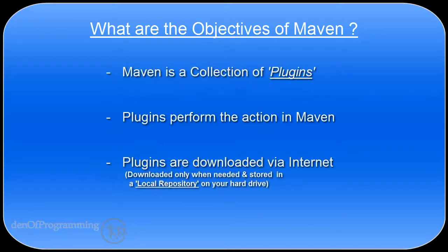Maven provides easy migration to new features. Maven is really just a core framework for a collection of components or plugins. Plugins are where much of the real action is performed. They are used to create JAR files, compile code, unit test code, and many more things. Almost any action you can think of being performed on the project is implemented as a Maven plugin.